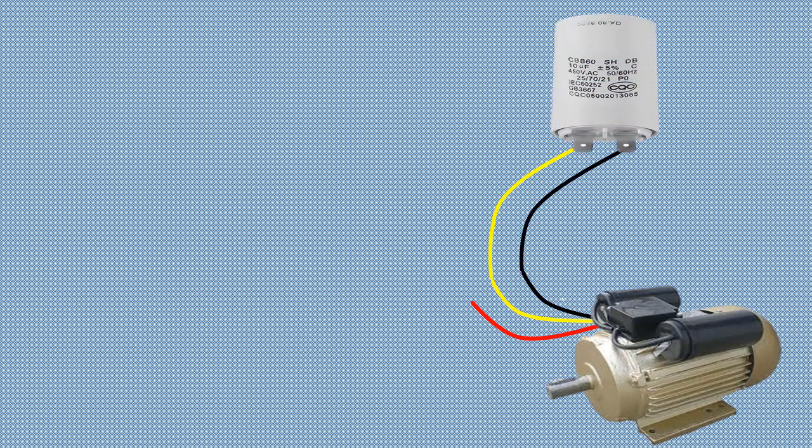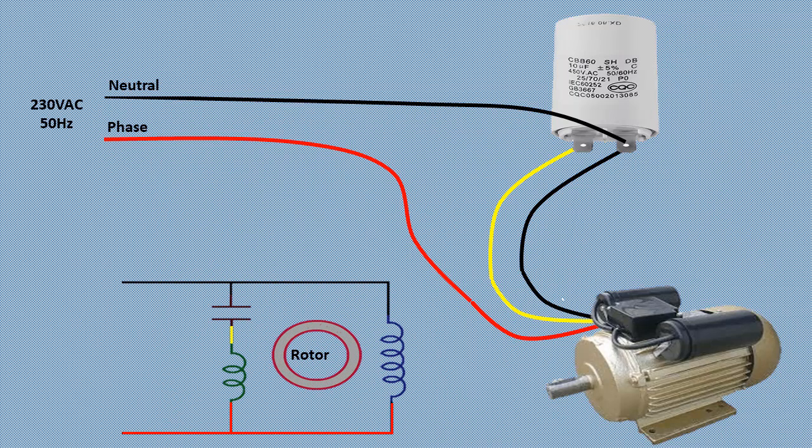Although it is called a single phase motor, a single phase induction motor is not actually a true single phase motor. In terms of construction, it can be considered a split phase or two phase motor. A single phase motor consists of two windings, the main winding and the starting winding. These two windings have different current phases, which is why the motor is referred to as a split phase induction motor.